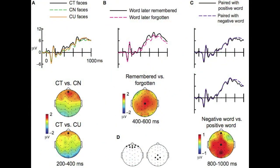What is less understood are the computational bases of the biases and heuristics that are used by human cognition to make sense of complex and uncertain information under time-stressed conditions. Meeting these challenges requires the use of methods from cognitive neuroscience.